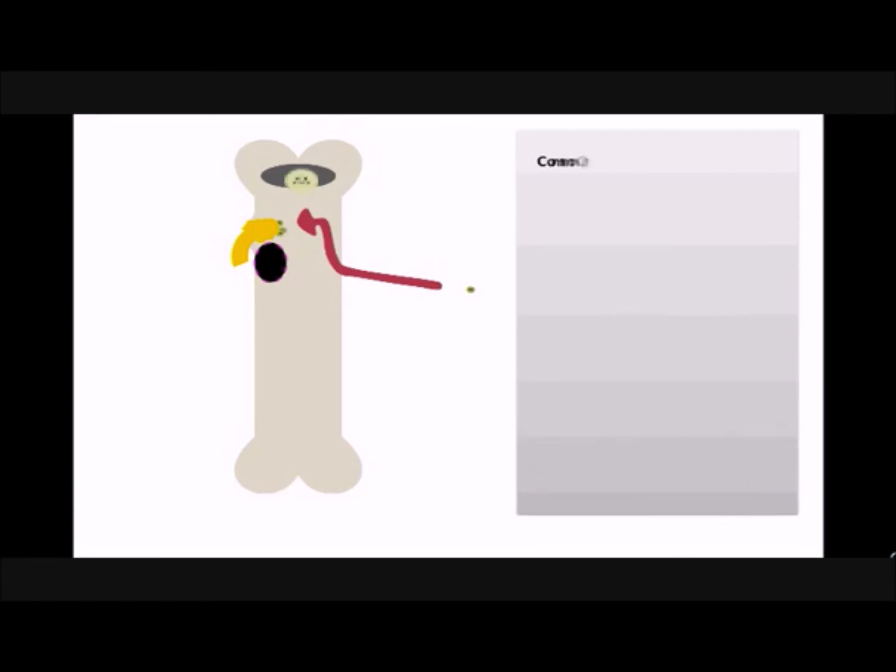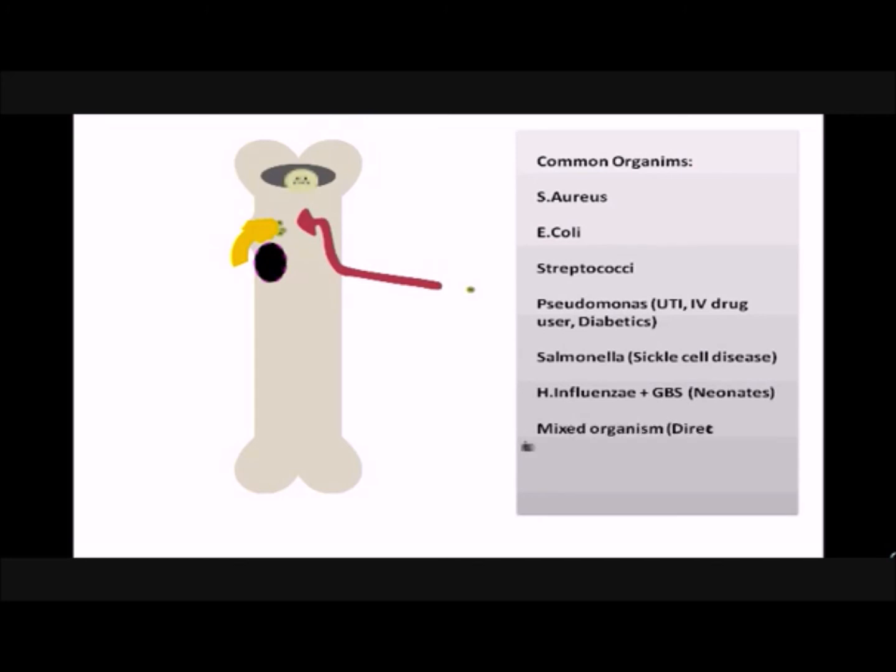Common organisms causing acute osteomyelitis are Staphylococcus aureus, Escherichia coli, Streptococci, Pseudomonas and Salmonella in cases of sickle cell disease, Haemophilus influenzae, Group B Streptococci, and mixed infection in cases of inoculation.